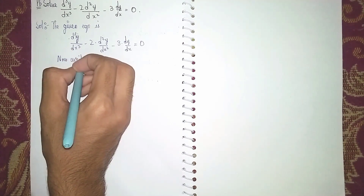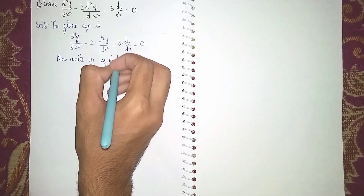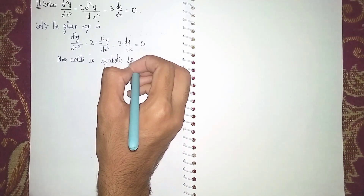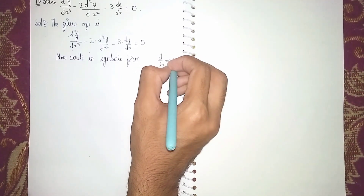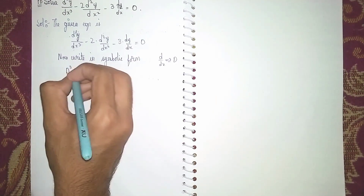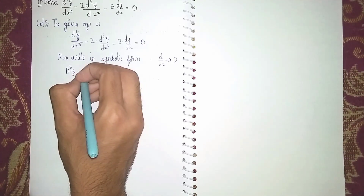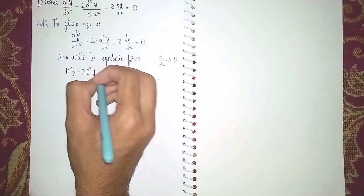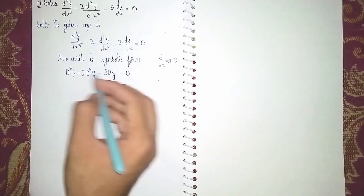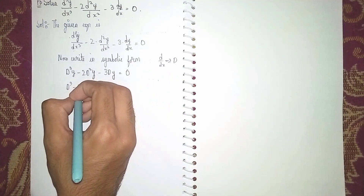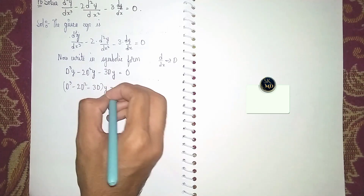Now write in symbolic form. Symbolic form means instead of d/dx we write capital D. So the equation becomes D³y minus 2D²y minus 3Dy equals zero. In this, we take y common, so it becomes (D³ minus 2D² minus 3D) times y equals zero.